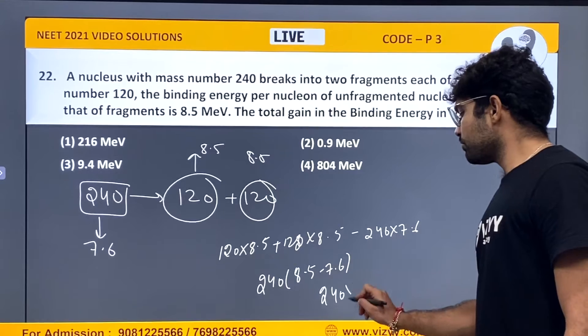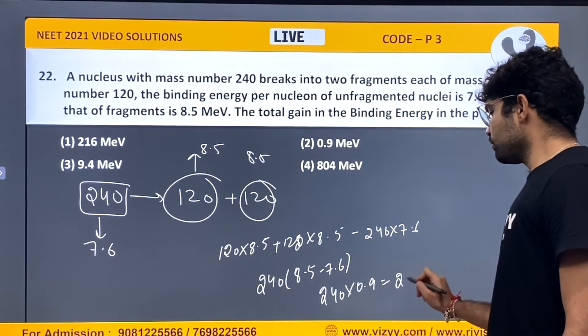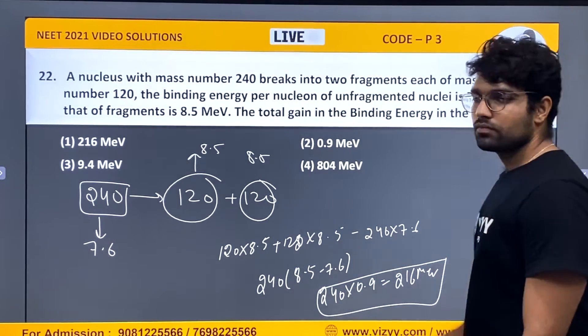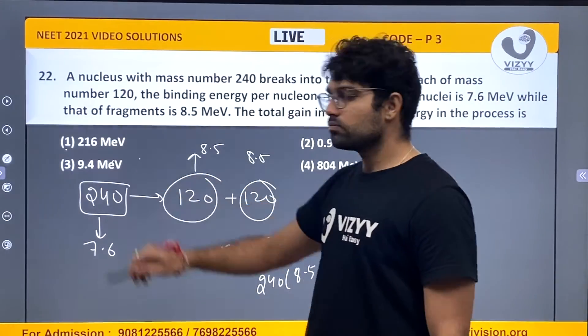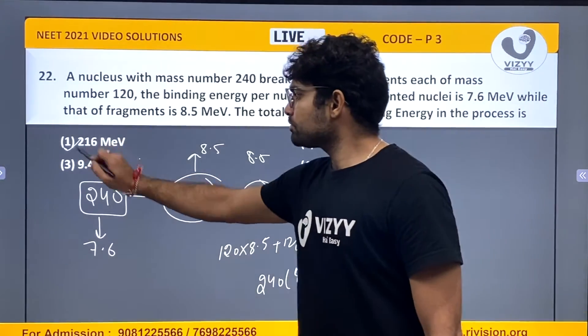Which is equals to 240 into 0.9 which is nothing but 216 mega electron volt. This is the binding energy which is gained. Option 1. Next question.